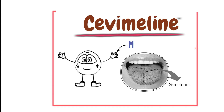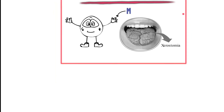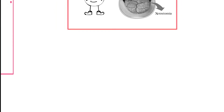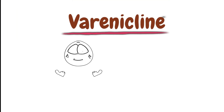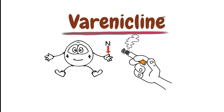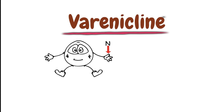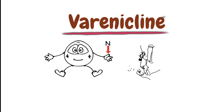The last choline ester in the direct-acting cholinergic agonists is varenicline. Varenicline is a selective nicotinic agonist and is exclusively used for smoking cessation.